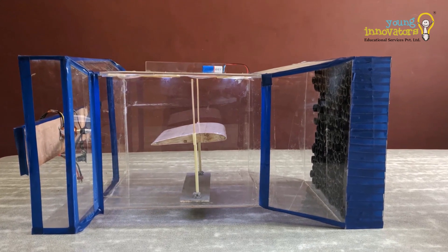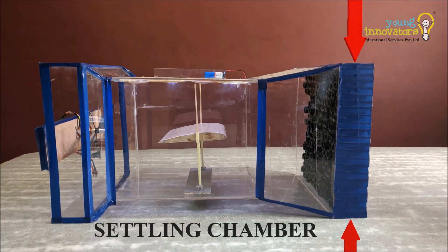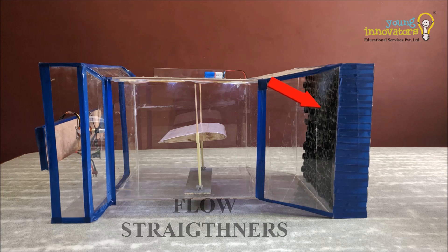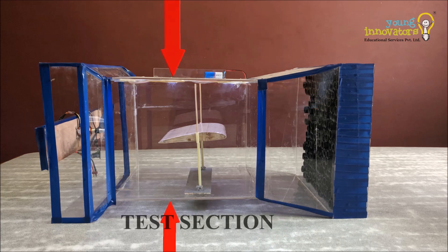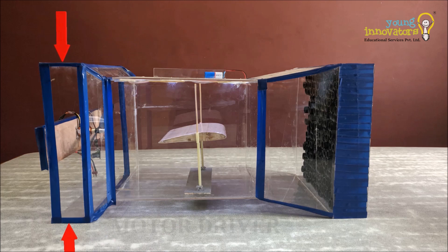The parts of the wind tunnel consist of settling chamber, flow straighteners, contraction, test section, diffuser, and motor driver.